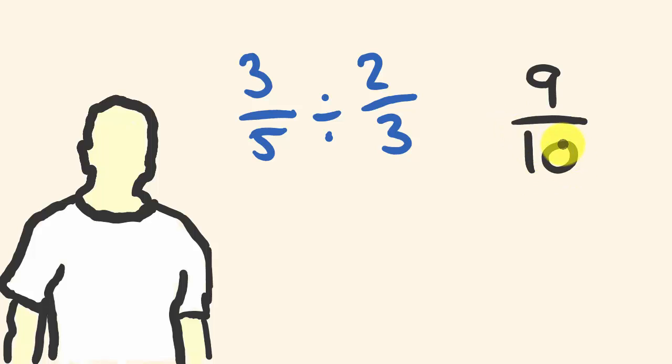So how fast can you do the following? 3 fifths divided by 2 thirds. You should have your answer straight away. Now look, if you got this answer of 9 tenths, congratulations, you got the correct answer. If not, I'm going to show you how you can divide fractions into one another that quickly.